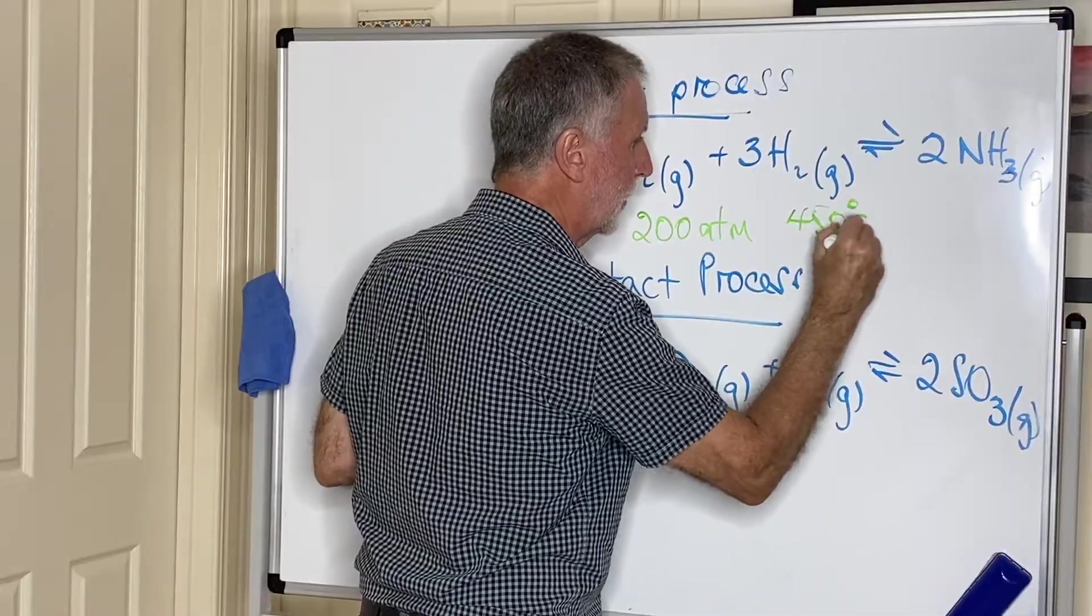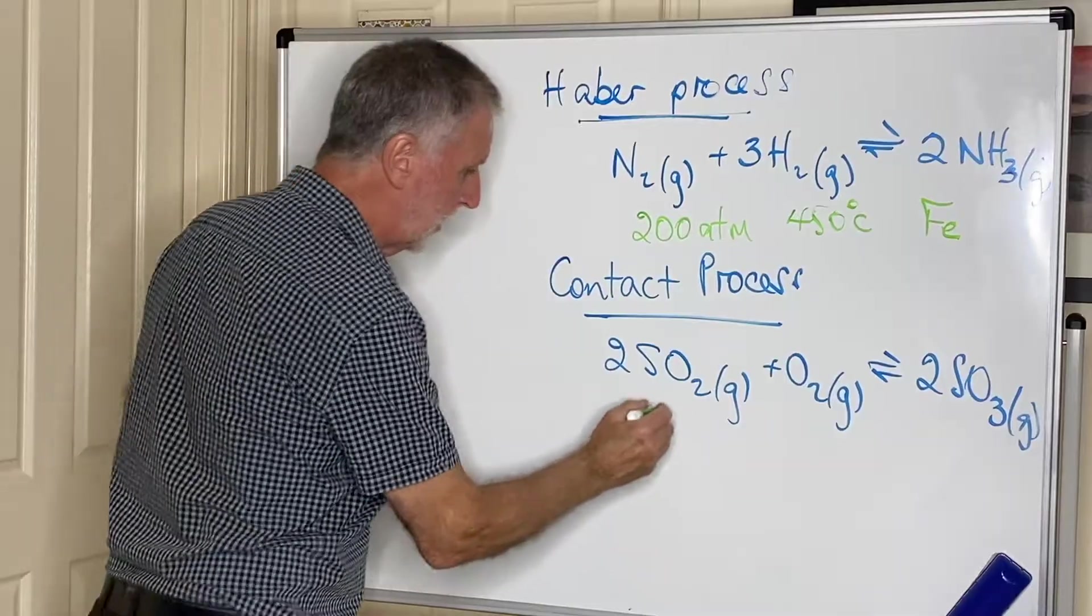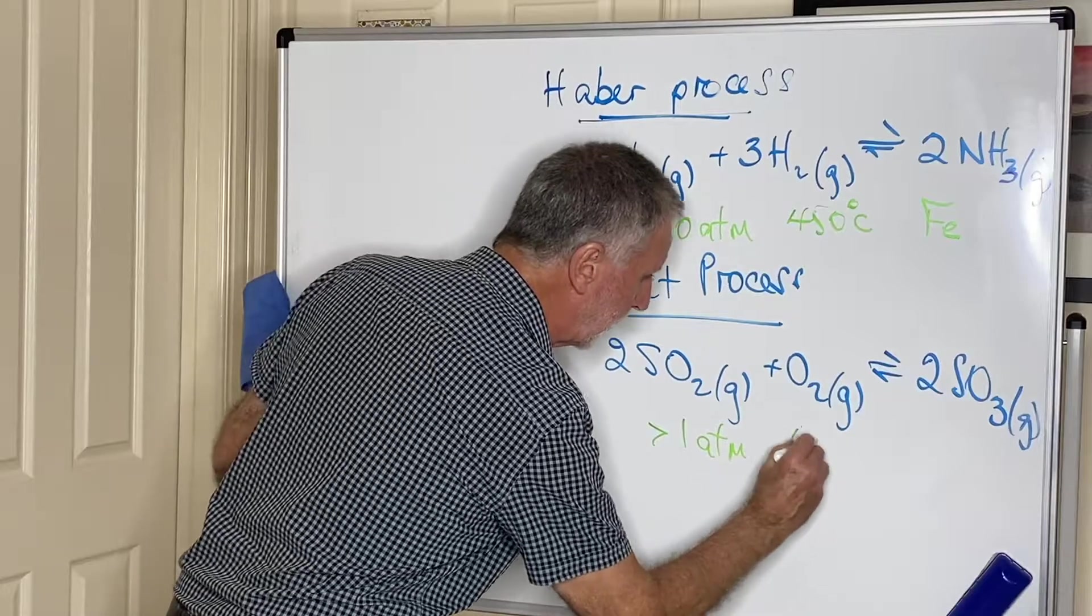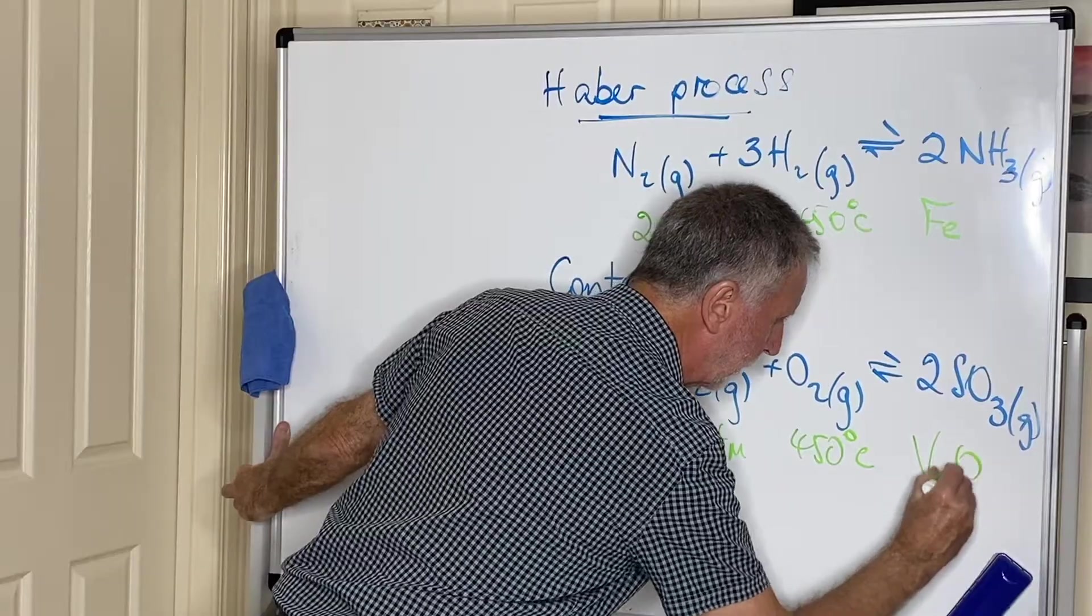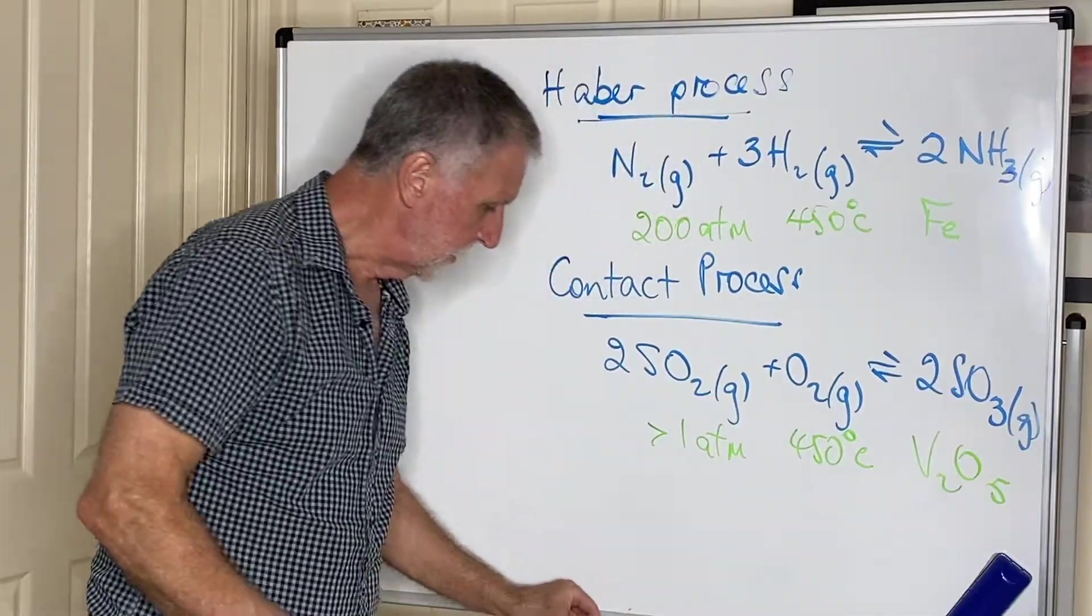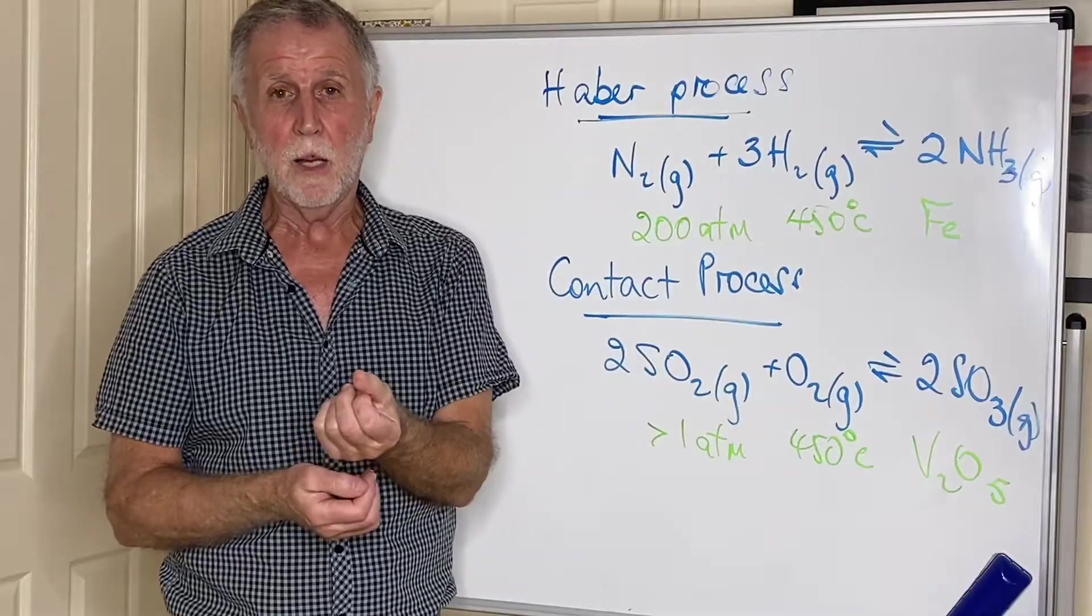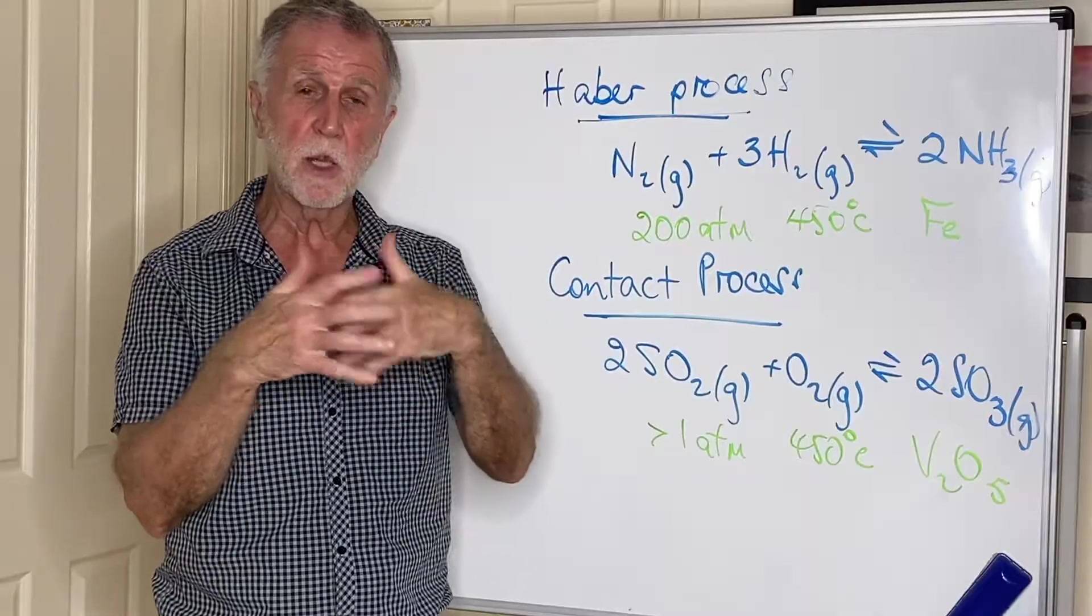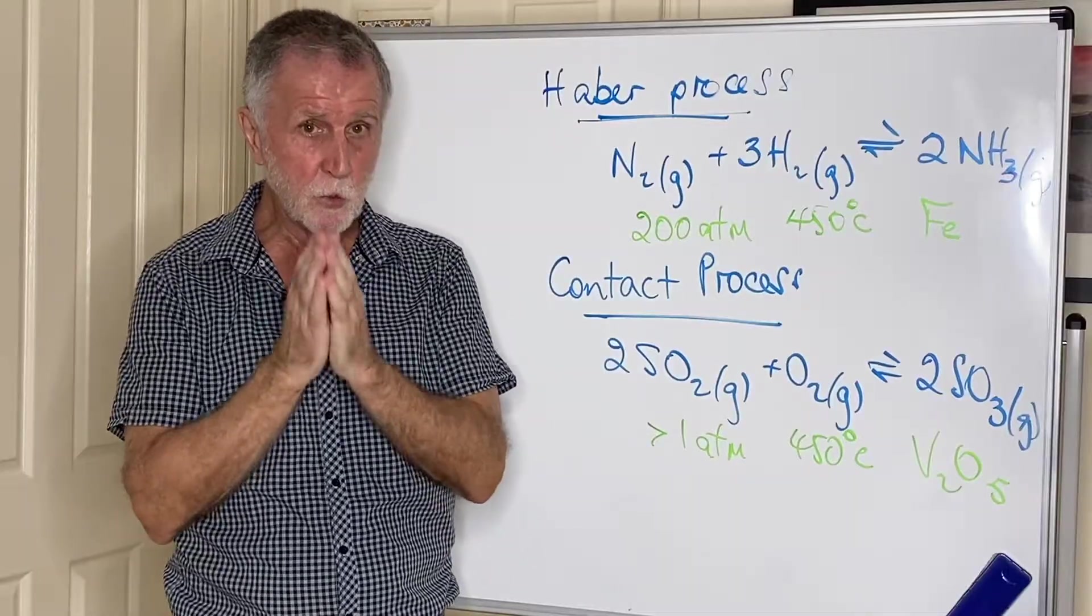In the Contact process, they use pressures just over an atmosphere, a temperature of around about the same, and the catalyst this time is called vanadium pentoxide. Now, at the start of this chemistry unit in Unit 3, we did chemical equilibrium and learned about how reversible reactions can be moved one way or the other depending on conditions.